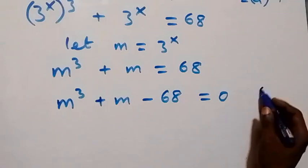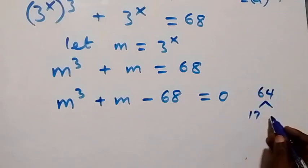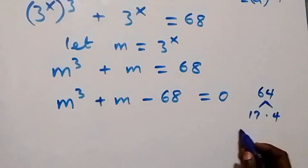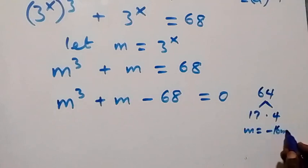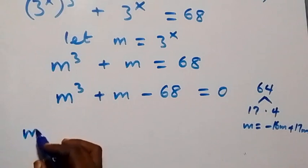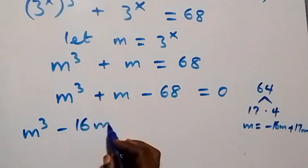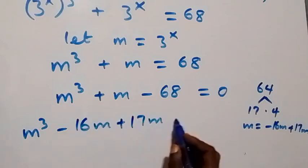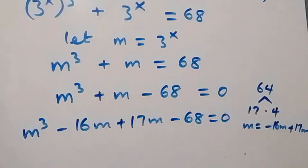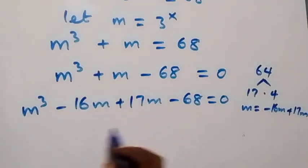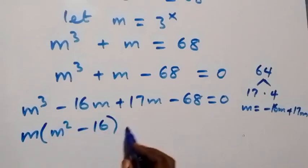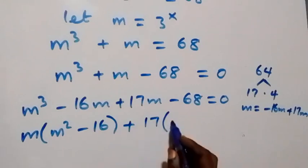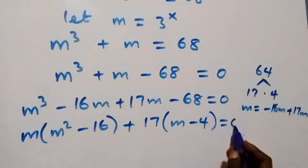Here we can factor: 68 as 17 times 4, and the m term can be rewritten so that the equation becomes m cubed minus 16m plus 17m minus 68, which equals 0. Grouping these, we take m common from the first group to get m(m² − 16), then 17 common from the second group to get 17(m − 4), equal to 0.